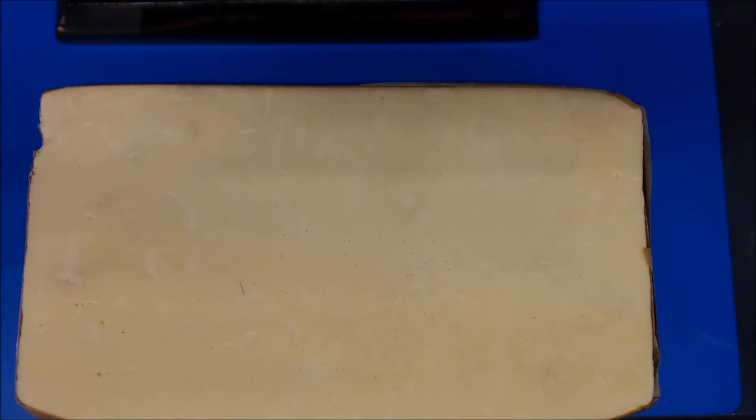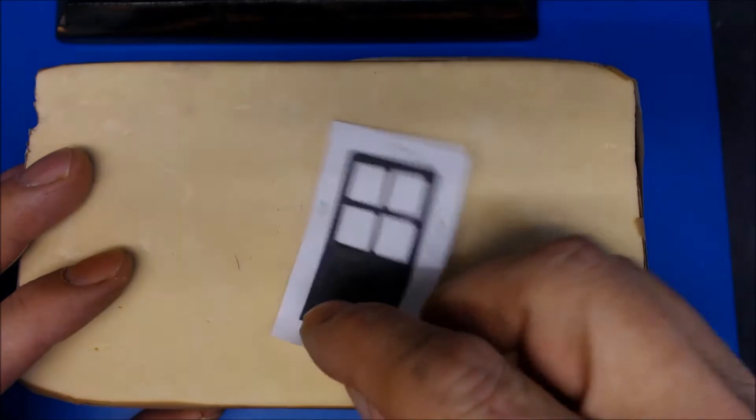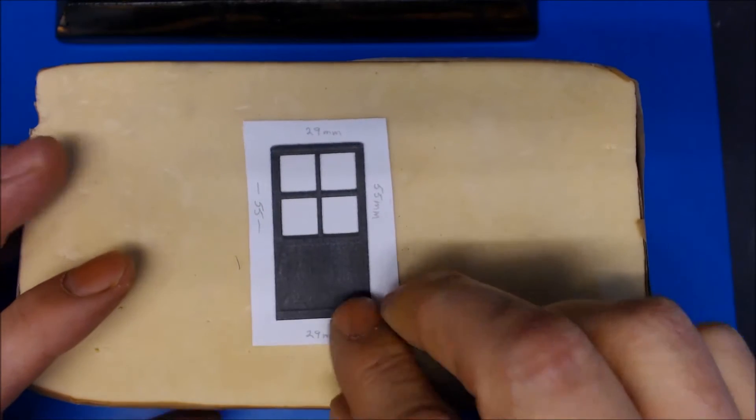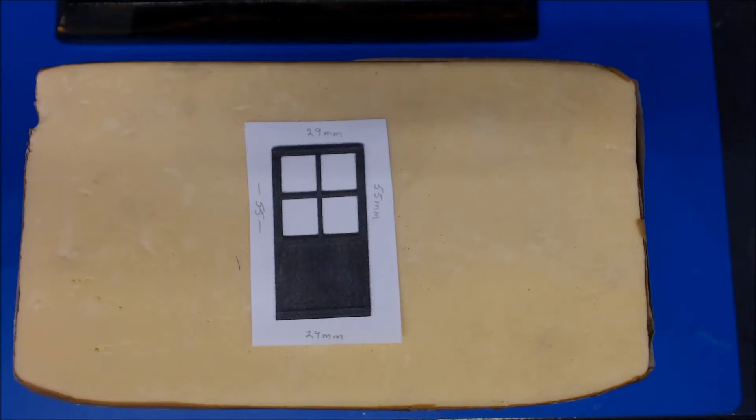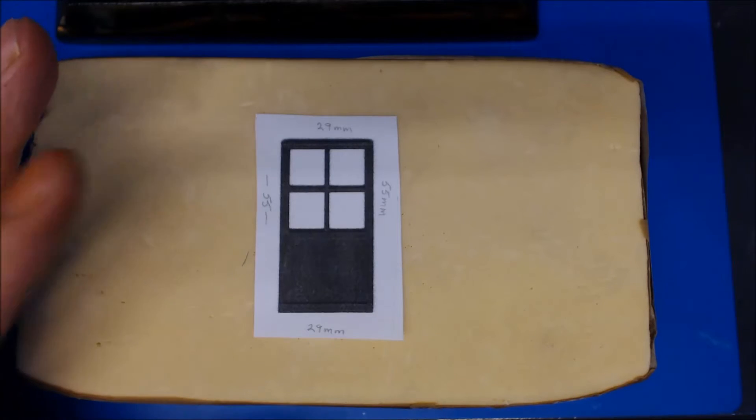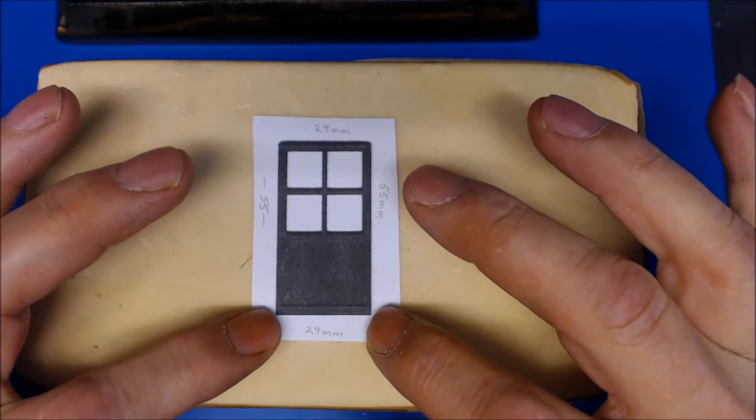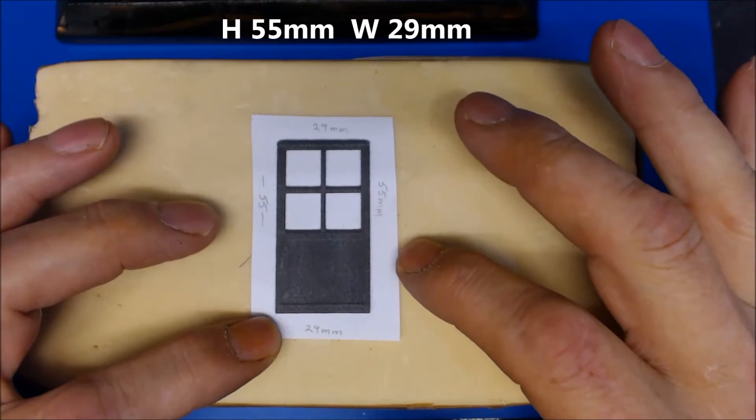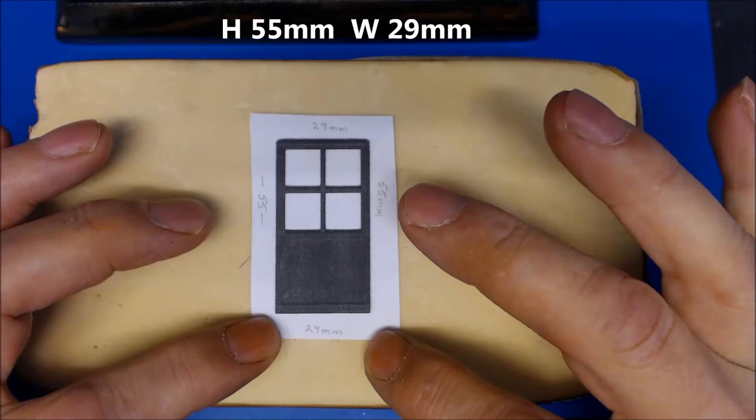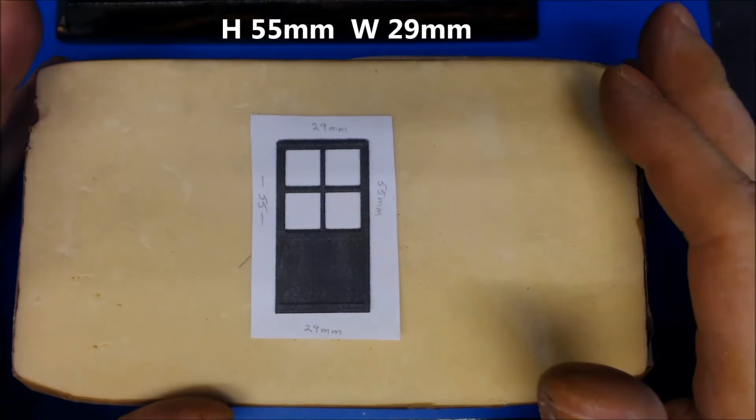The second item you're going to need is some sort of template for your door. This little template - I already had a 1:35 scale door which I just photocopied, and this is what I used to make my doors up. But if you haven't got that, you can draw this out because it's only 55 millimeters high by 29 millimeters wide.